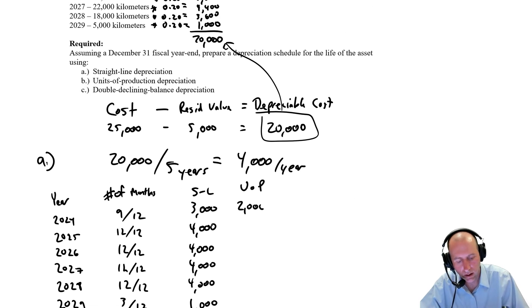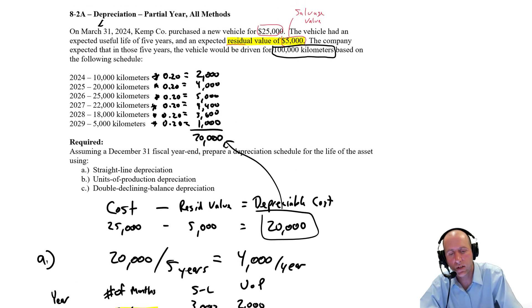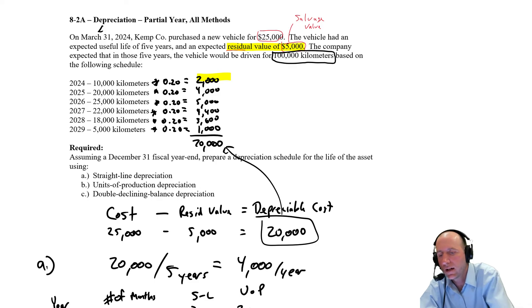So my units of production depreciation, $2,000. Oh, and actually, this is important. The number of months, I didn't take that first year and multiply by 9 over 12. I didn't do that. Why didn't I do that? Why would that be dead wrong to do?